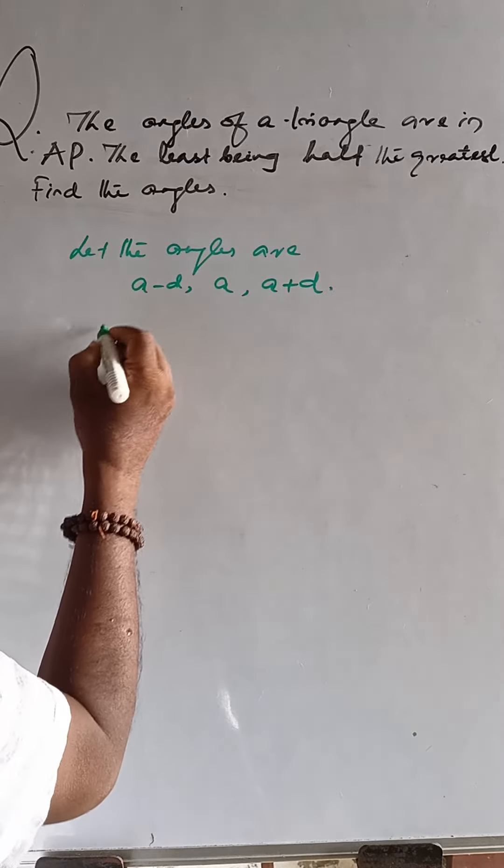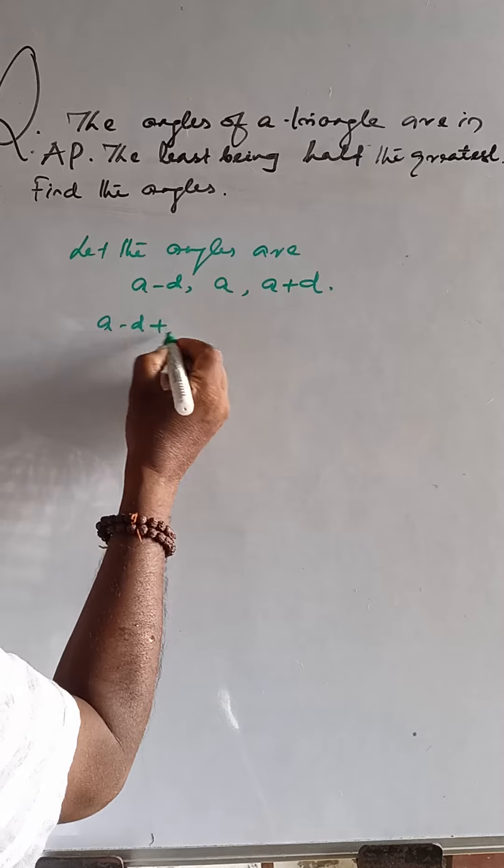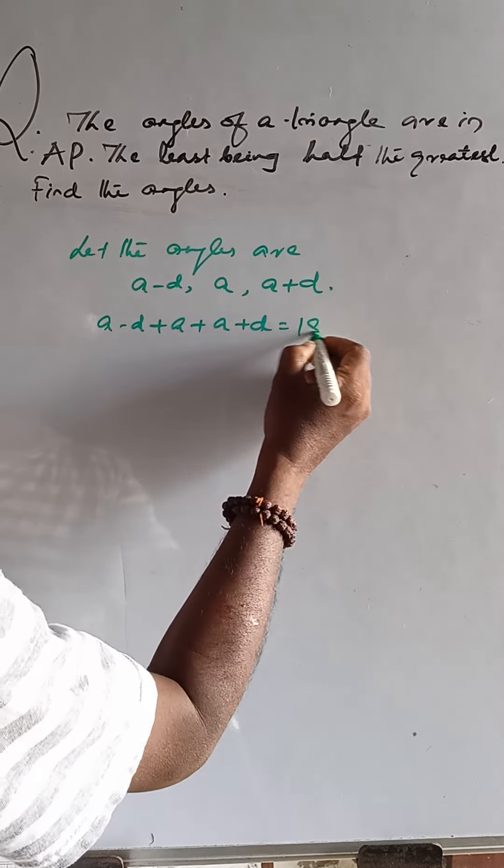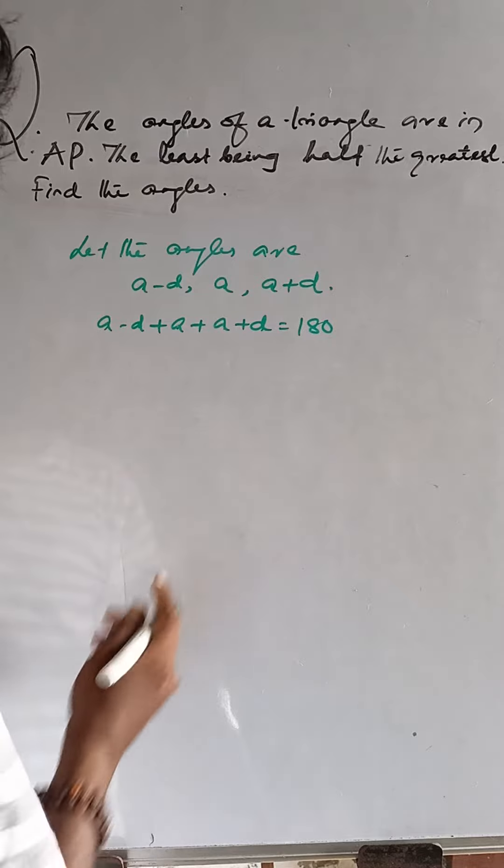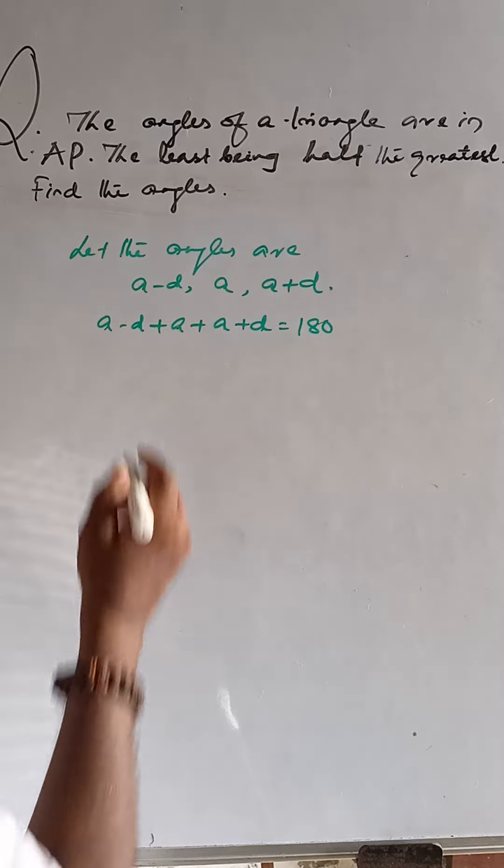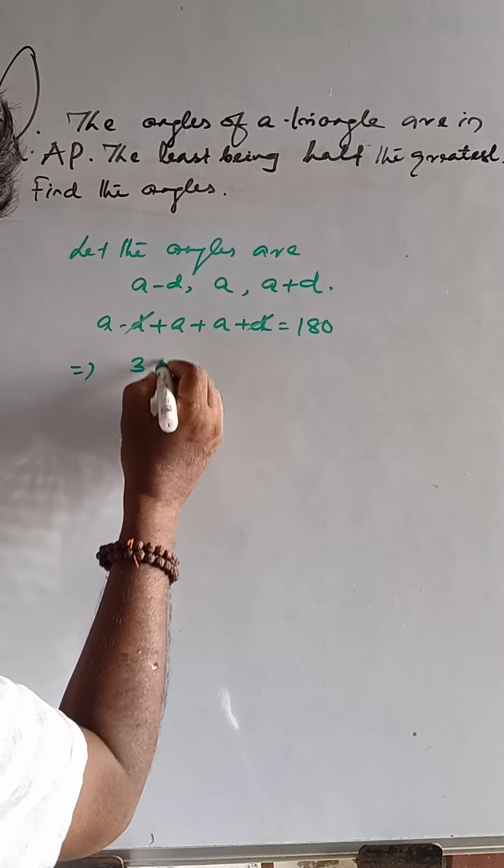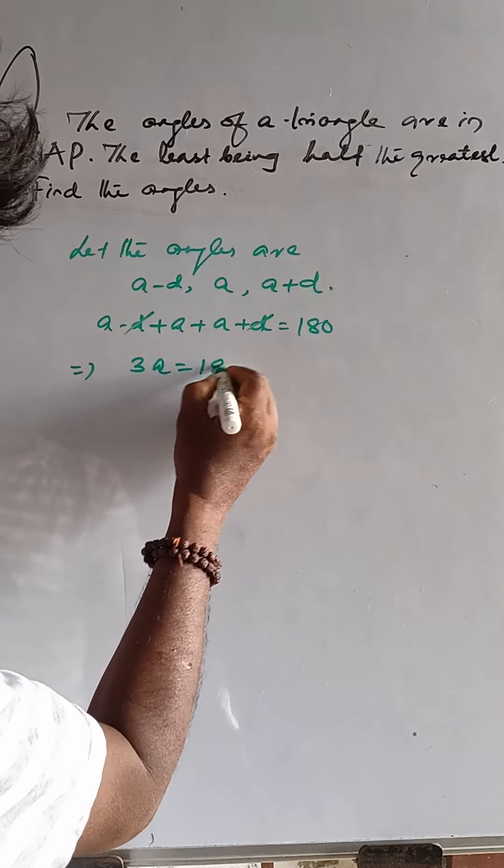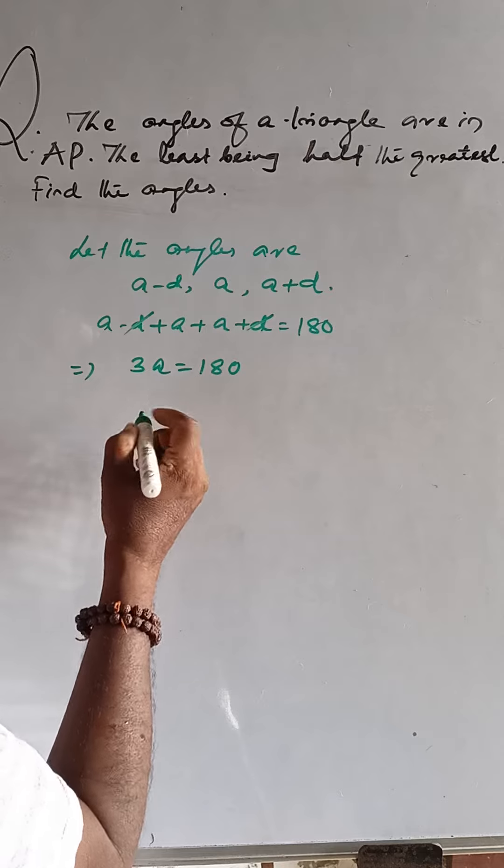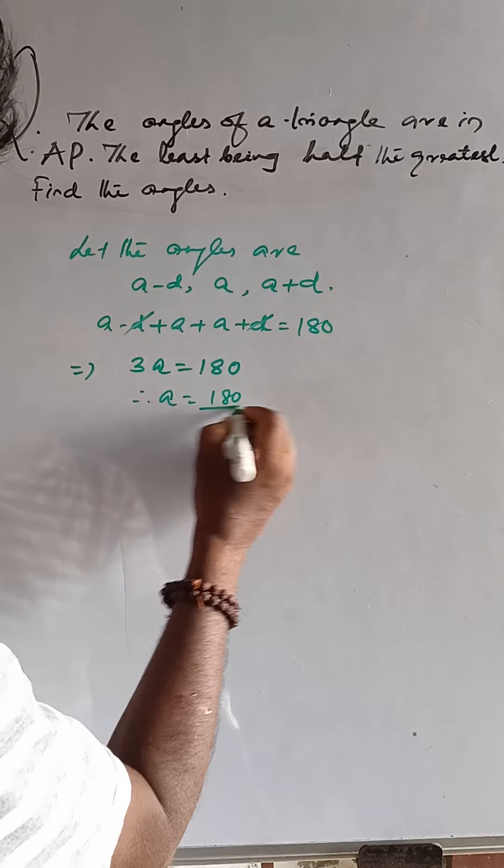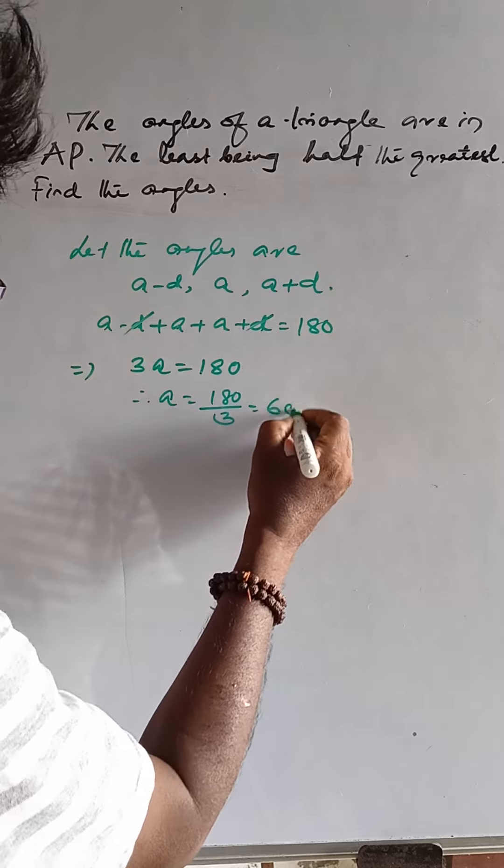Then, sum of the angles: A minus D plus A plus A plus D is equal to 180 degrees by angle sum property. Then, plus D minus D cancel, so 3A is equal to 180, and A is equal to 180 by 3, that is 60.